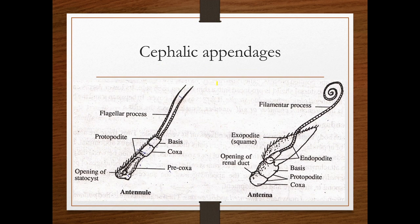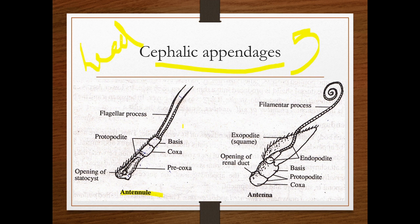Now here are the cephalic appendages. There are five pairs seen in the head region. The first one is the antennule. In the antennule, the protopodate is three-segmented — precoxa, coxa, and basis. Precoxa has a concavity for the eyes. The exopodite and endopodite are not present in the same form here.